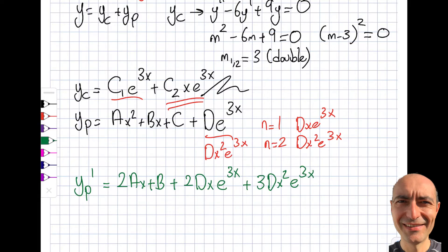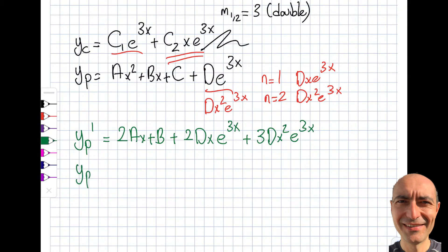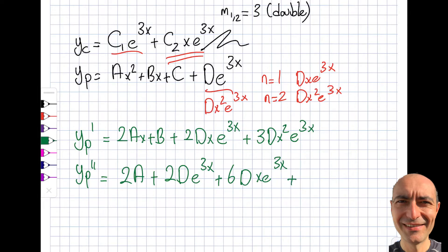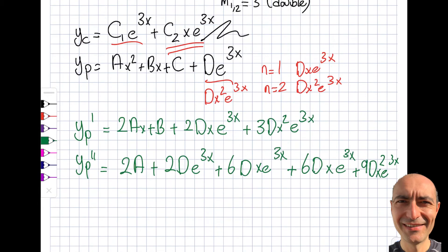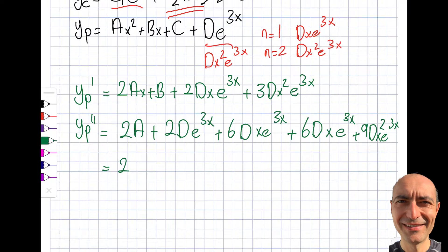Now yp'' — the 2a term is straightforward. Then for the exponential terms: 2d·e^(3x) plus 6dx·e^(3x) plus 6dx·e^(3x) plus 9d·x²·e^(3x). Let me write this more organized: 2a, and the rest multiplied by e^(3x) — so we have 9d·x² + 12dx + 2d — all times e^(3x).